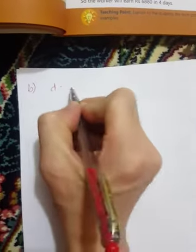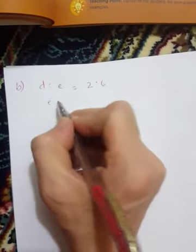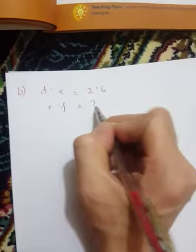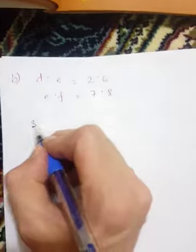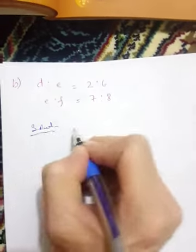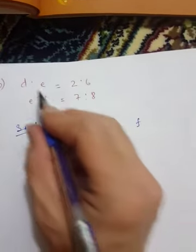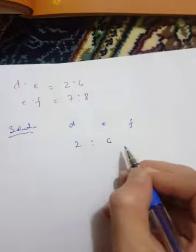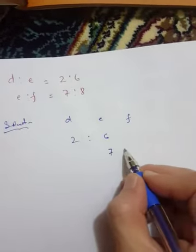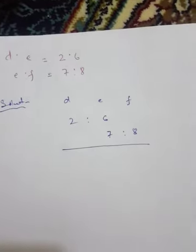Part b: d ratio e equals 2 ratio 6, and e ratio f equals 7 ratio 8. Here e is six in one ratio and seven in the other - they're not the same.